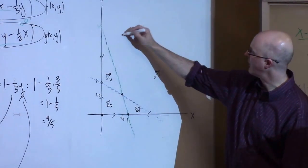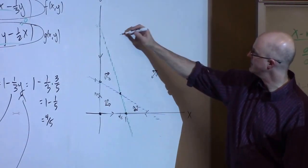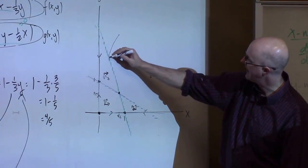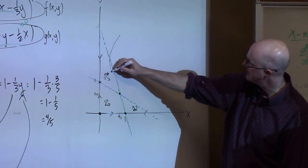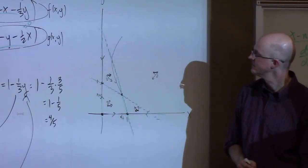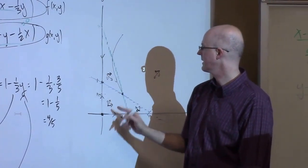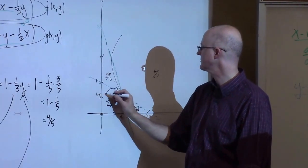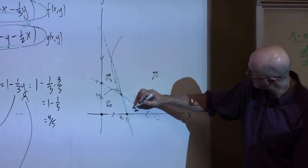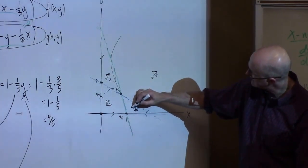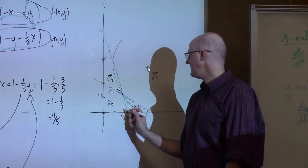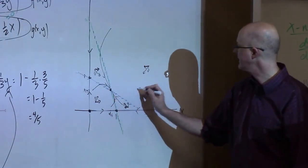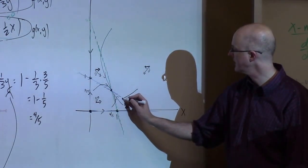Now pick some representative initial conditions. If your initial condition is up in the northwest region, you move southwest, cross the green nullcline vertically, and then head southeast toward the equilibrium point. If you start in the southeast region, you go northeast, cross the blue nullcline horizontally, and head toward that equilibrium. Starting down in the southwest, you go northwest. Starting near the axes, you may first cross the green nullcline vertically before heading northwest.